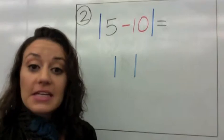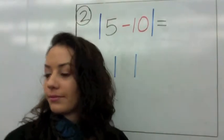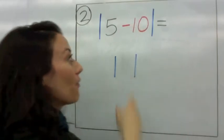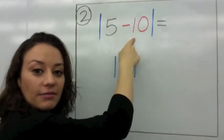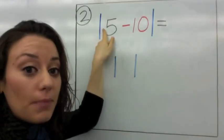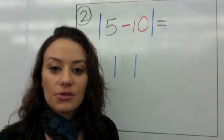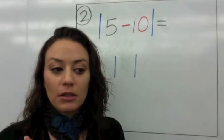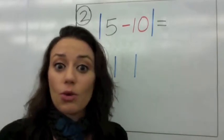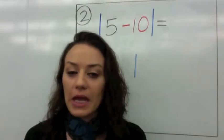Number 2 says the absolute value of 5 minus 10 — 5 take away 10. 5 is a positive number, you don't see it but it's invisible. Positive 5 and negative 10. You're starting with a small number taking away a bigger number, so the answer is going to be negative.